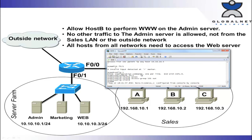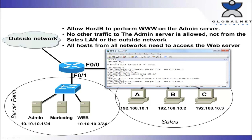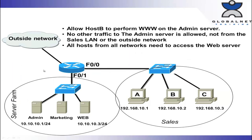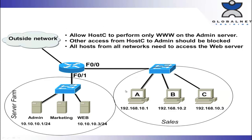We should do a copy run start, obviously. But let's delete this — no access list 101 — because we have a third one to look at. I would rewind and watch both of these again, go through them over and over, and set up Packet Tracer, GNS3, whatever you have, and go through these labs. The third business requirement: allow host C to perform only HTTP on the admin server. Other access from host C to the admin should be blocked. So this isn't blocking everyone else — we're only blocking host C. All hosts from all networks need to access the web server. Again, permit, deny, permit — but our first permit is the same on all three, while the second and third lines are different each time.